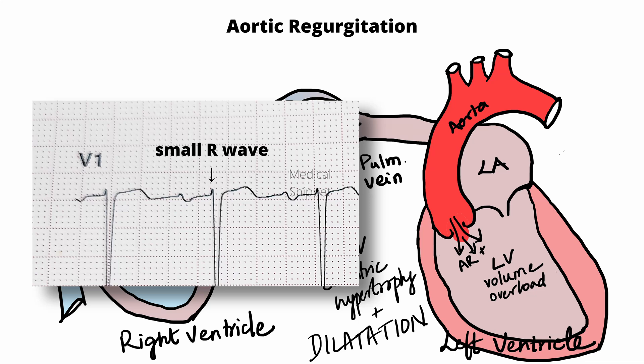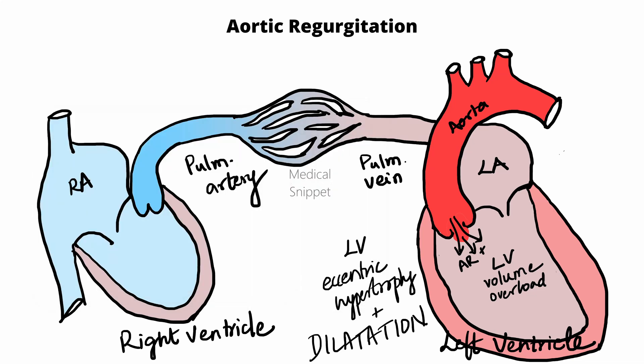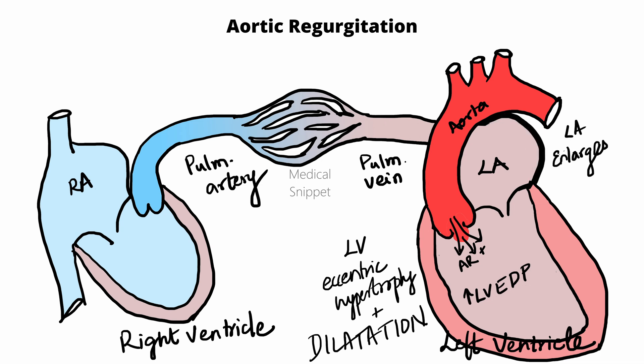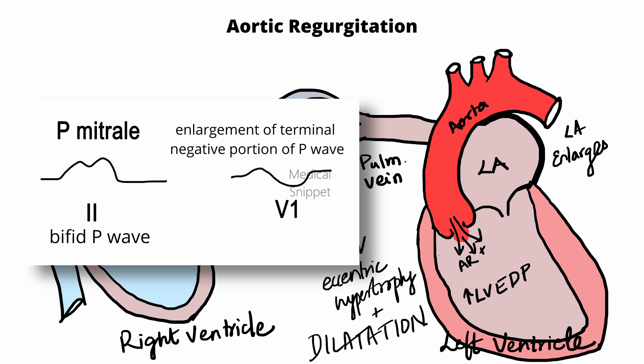As time progresses, LV end diastolic pressure rises, which causes back pressure changes, causing the left atrium to enlarge, which is seen as P mitrale in lead 2 and enlargement of the terminal negative portion of the P wave in V1.